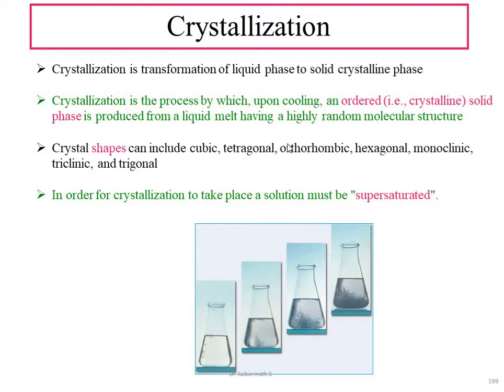The crystal shapes which form with this process include cubic, tetragonal, orthorhombic, hexagonal, monoclinic, triclinic, and trigonal. These crystals can form through this process.